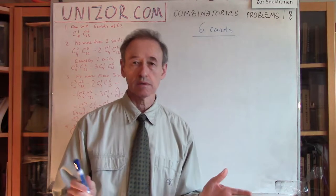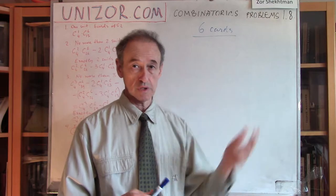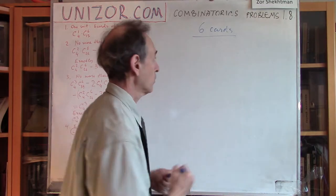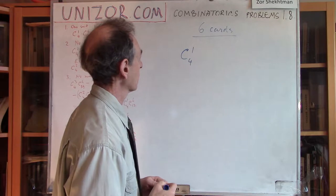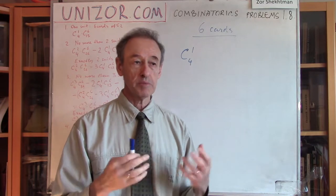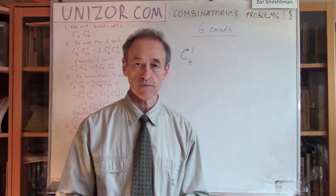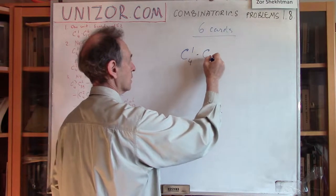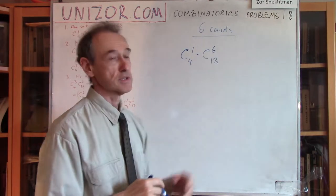This is a very simple problem. To solve it, you have to do basically two things. Number one, choose which suit you would like represented among these six cards. How many different ways to choose one suit out of four? It's C(4,1), which is 4. The next step: after choosing a particular suit, you have chosen a set of 13 cards. Now you have to pick six out of these 13.